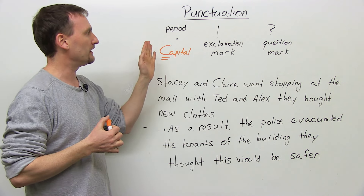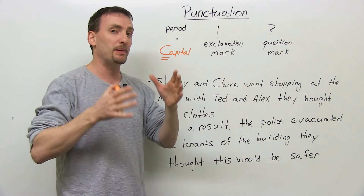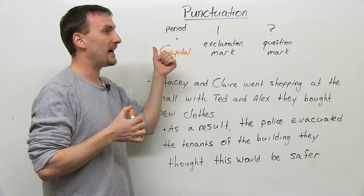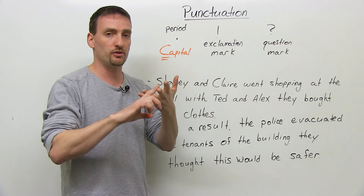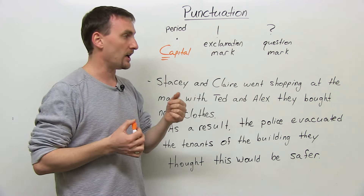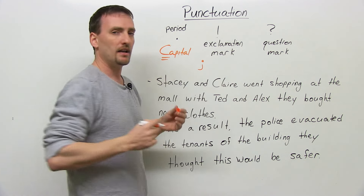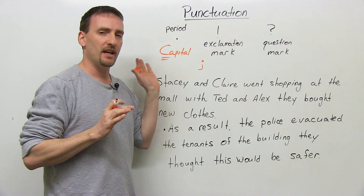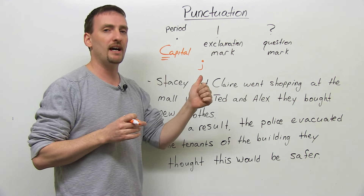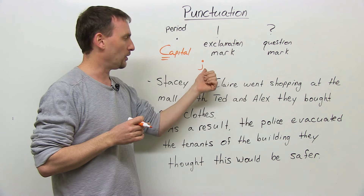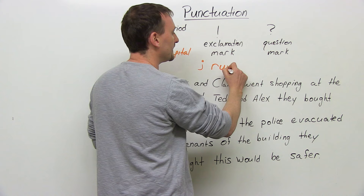Another thing to remember about the period is that once you have a sentence with a complete independent clause, and you don't have another independent clause with a conjunction — and, but, so, or, etc. — or a semi-colon, that means your sentence is finished. If you have two independent clauses in a sentence and you don't have the conjunction, you don't have the semi-colon, means you have a run-on sentence.